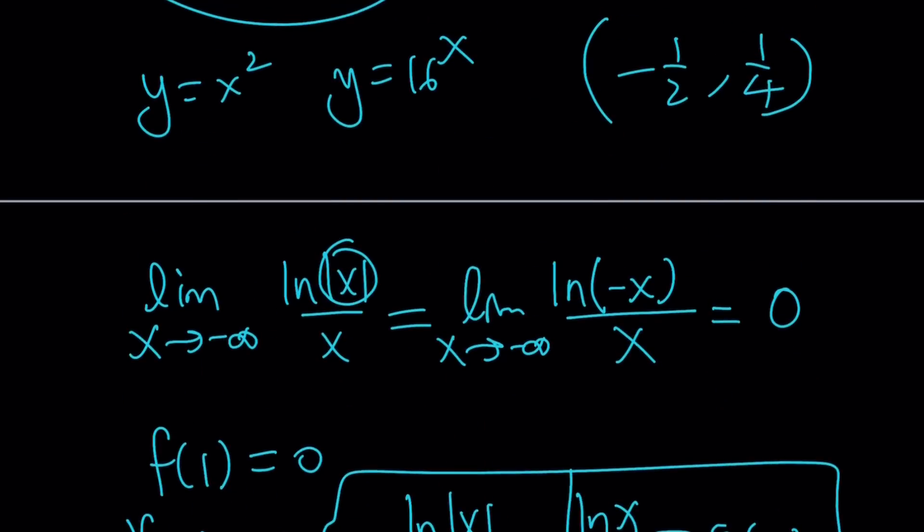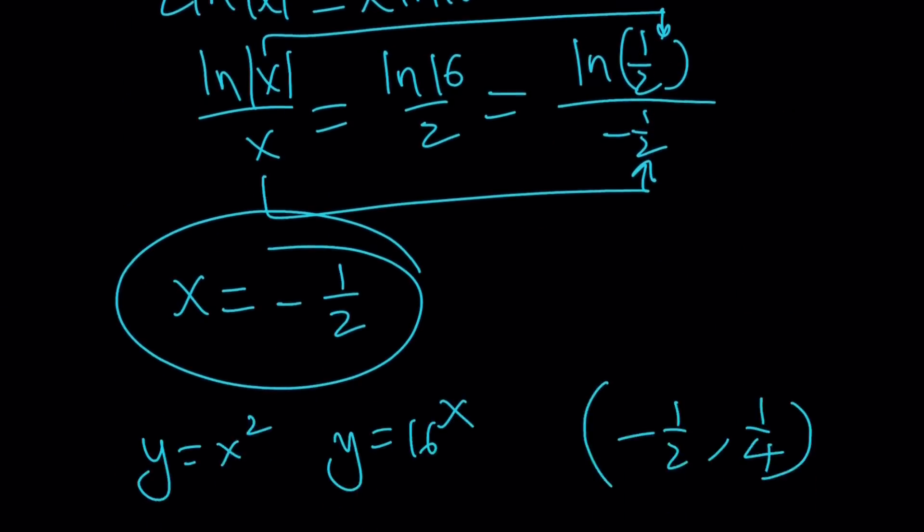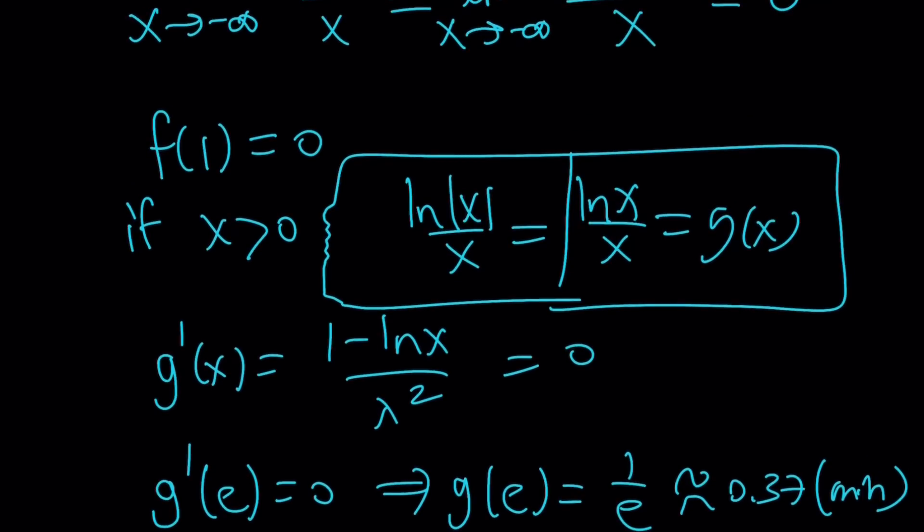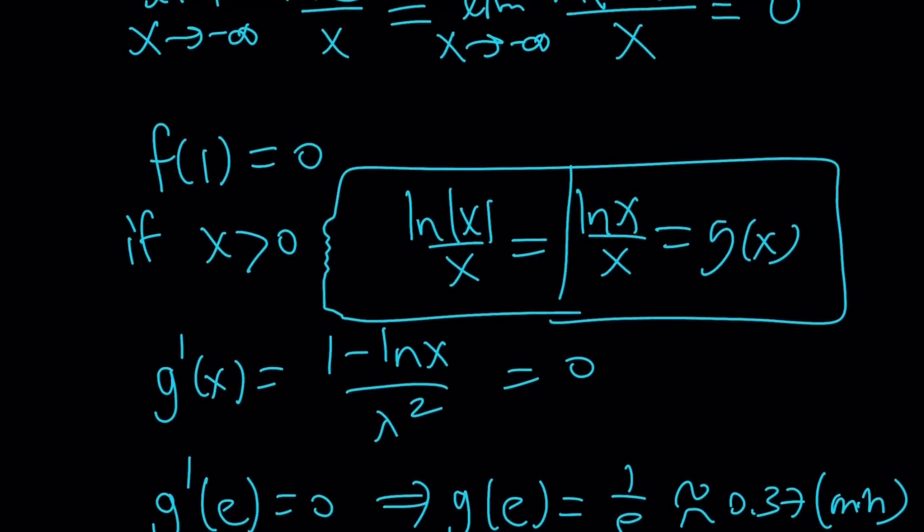And then set it equal to zero. We notice g prime of e is zero. And g of e is one over e. And that's approximately 0.37. That's actually a minimum point on the graph of g of x. So what is that supposed to mean? We are trying to set this equal to what? We are trying to set our function equal to ln 16 over 2. So our function was like this. Obviously, this value is much, much larger than the minimum. Therefore, they're not going to intersect on the positive x axis.